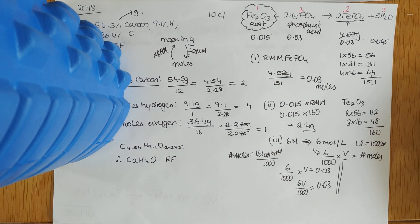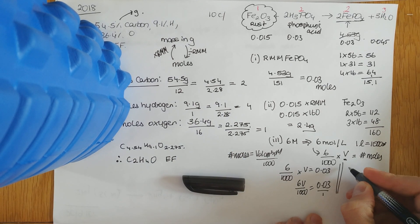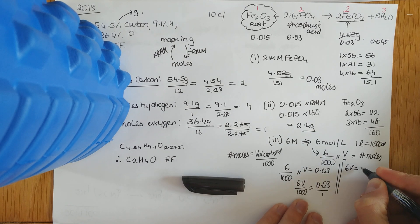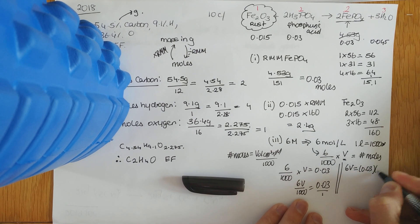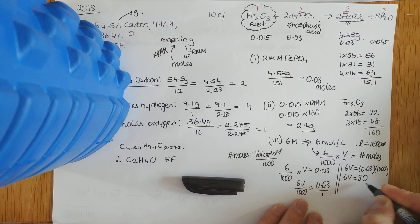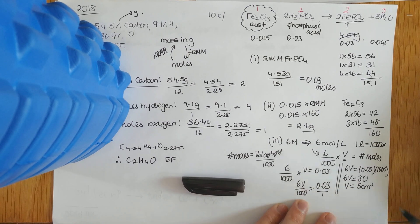So we're trying to work out V, the volume. Just simple maths, cross multiply, multiply the common denominator here, 6V, a thousand times that. Throw that in your calculator, gives you 30, so the volume is 30 over 6, which is 5 centimeters cubed.